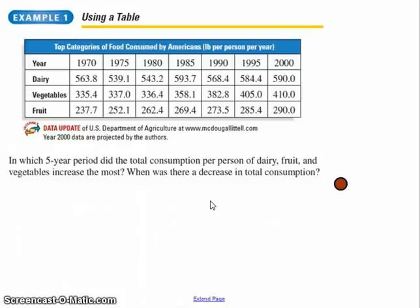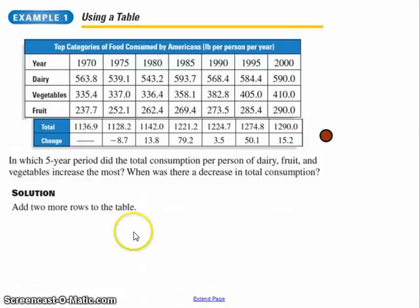Okay, well, if you've read the textbook, you know how to do this already. But if you haven't, it suggests that the textbook add two more rows to the table. Put in a row of the total amount and a row that shows how much the total changed. So now what I want you to do, now that you see that there, I want you to actually go ahead and answer these two questions. In which five-year period did it increase the most? And in which five-year period was there a decrease? Hit the pause button, come back, and we'll answer that question.